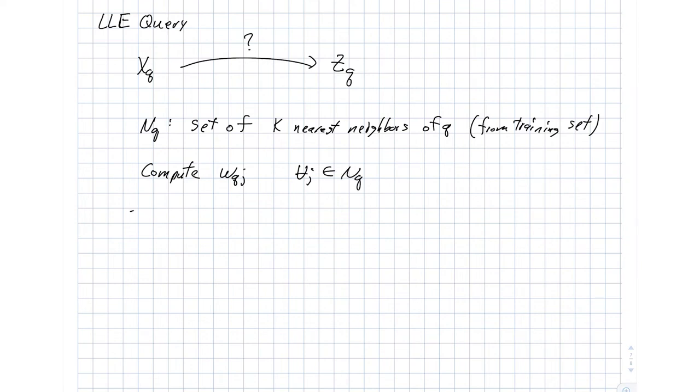Once we have those weights, we can then compute ZQ directly, and it is just a weighted sum over that neighborhood. Oops, not NJ, that is ZJ.